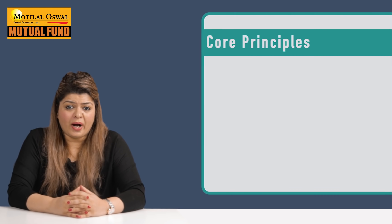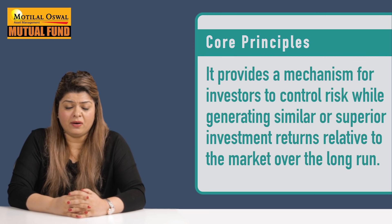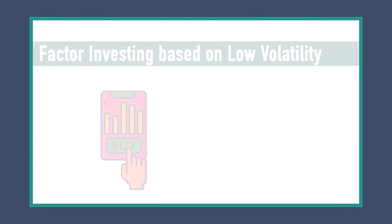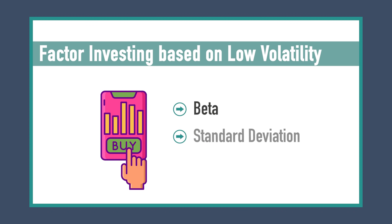It provides a mechanism for investors to control risk while generating similar or superior investment returns relative to the market over the long run. Factor-based investing on volatility comprises buying stocks with low historical volatility, measured using indicators such as beta and standard deviation.